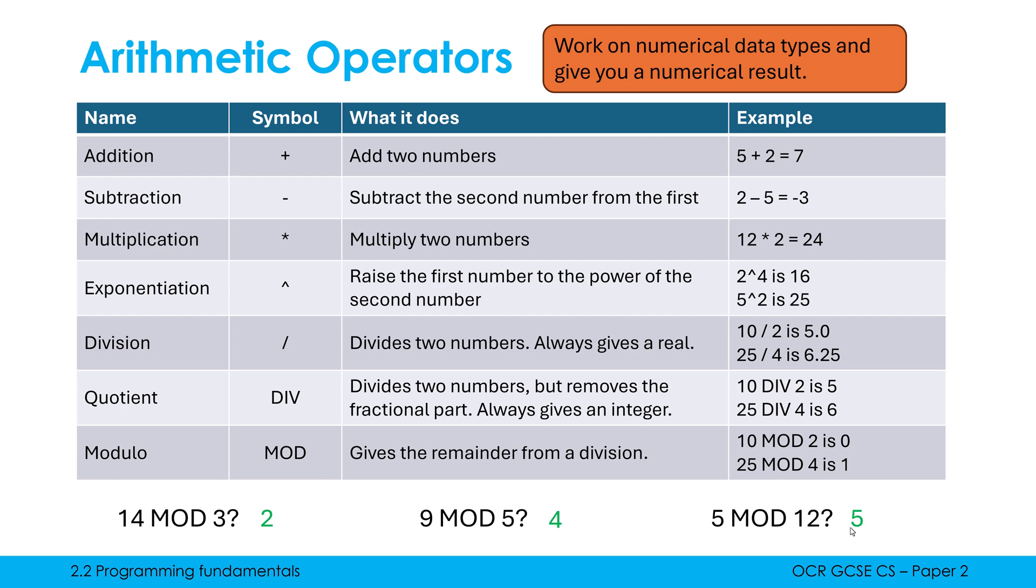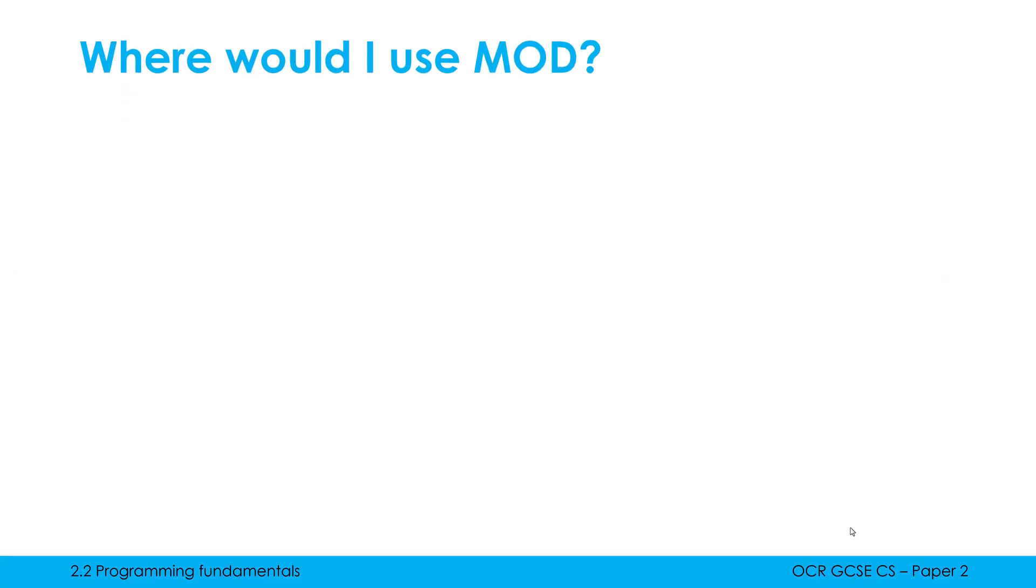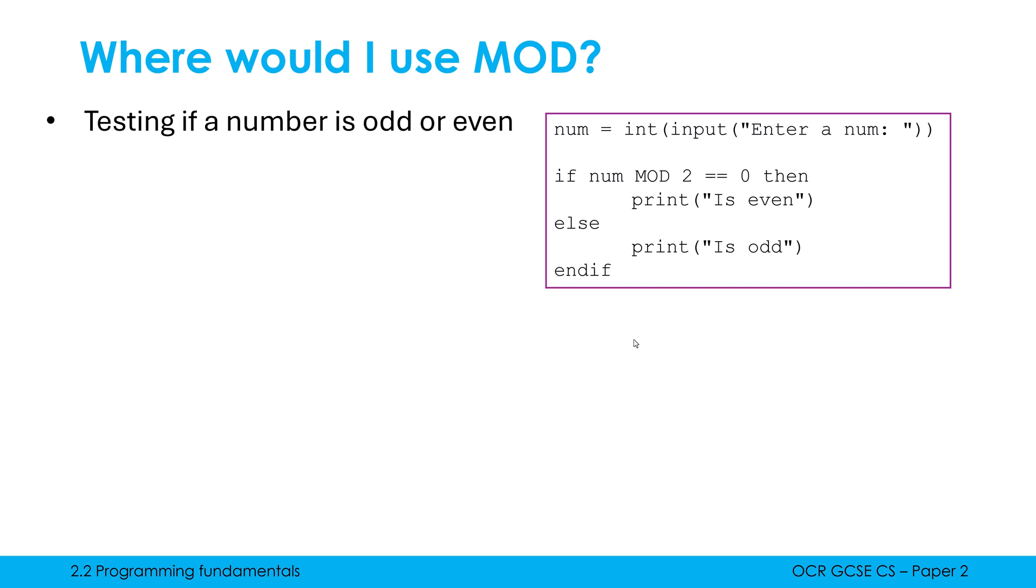Okay, to focus on MOD and quotient a bit more, where would we use MOD first of all in a program? Well, a common example is where we are checking to see if a number is odd or even. Here is my code. I'm asking the user for a number. I'm casting it to be an integer. I'm then using an if statement to check to see whether it's even or odd.